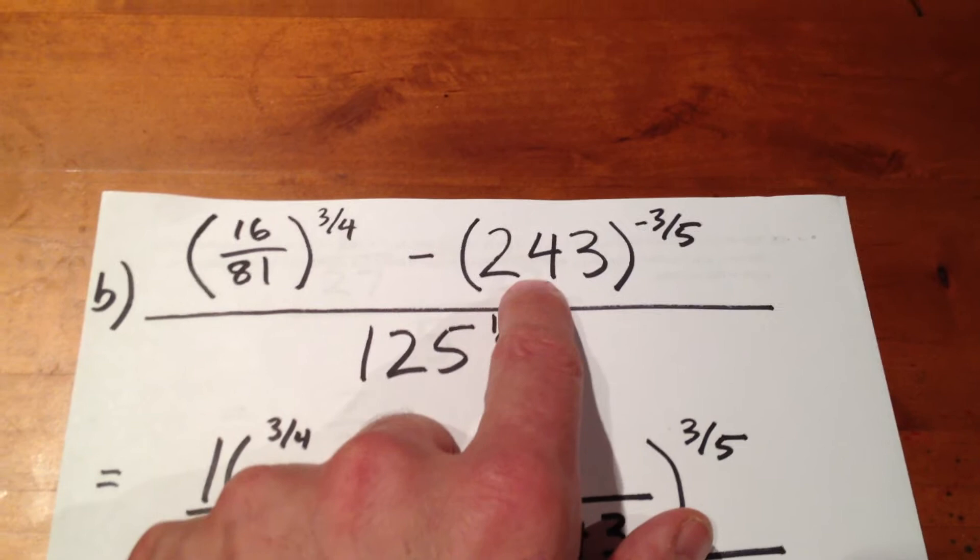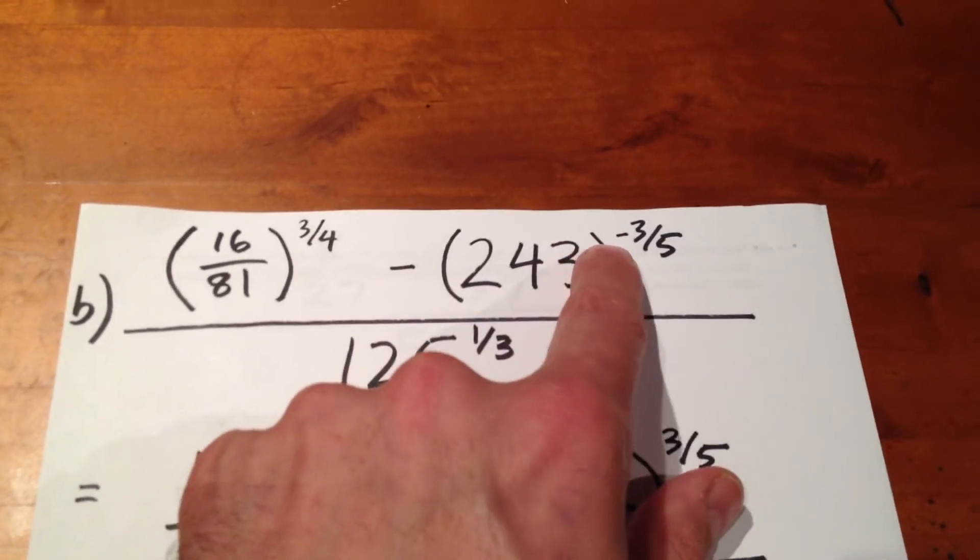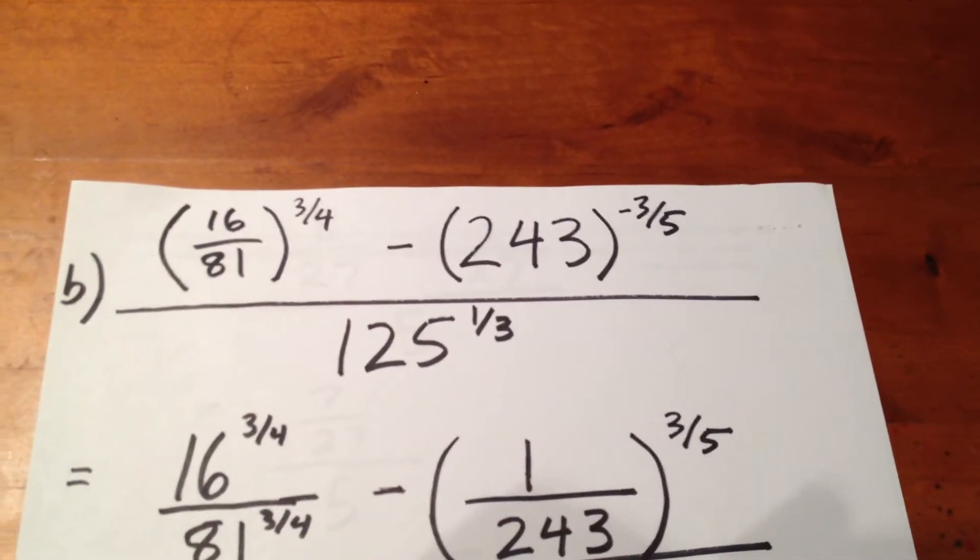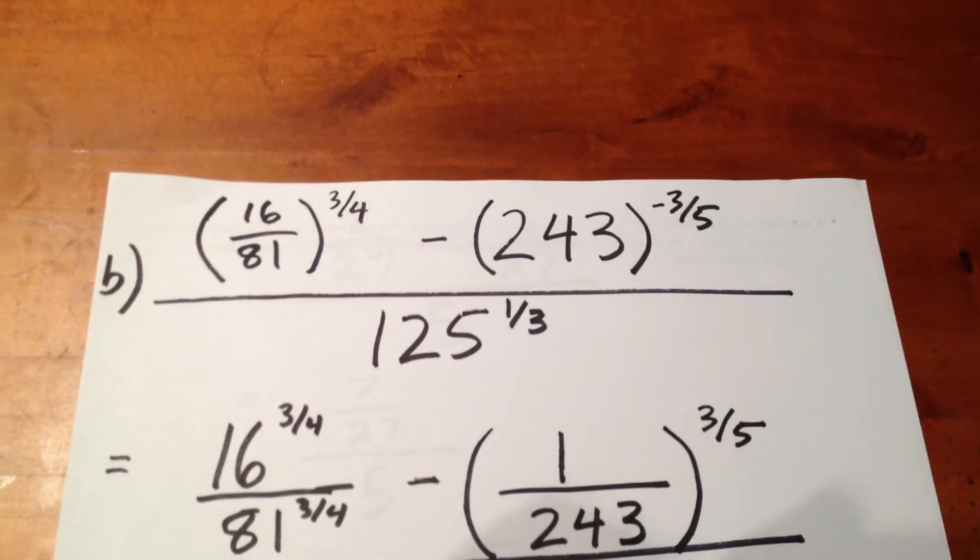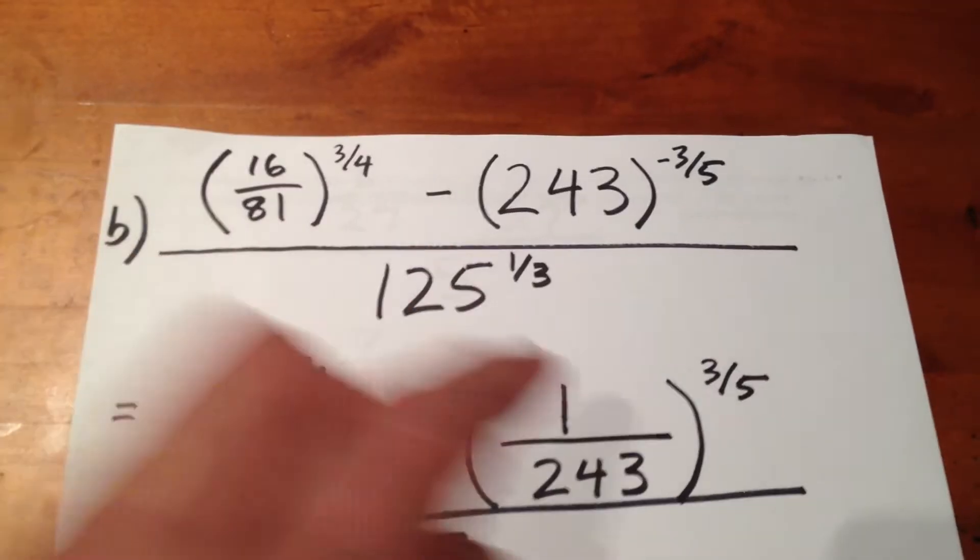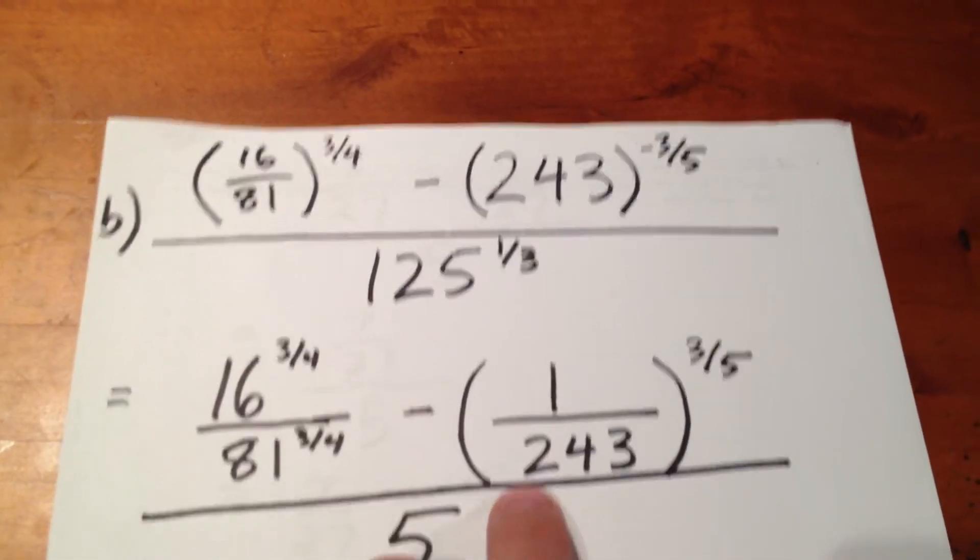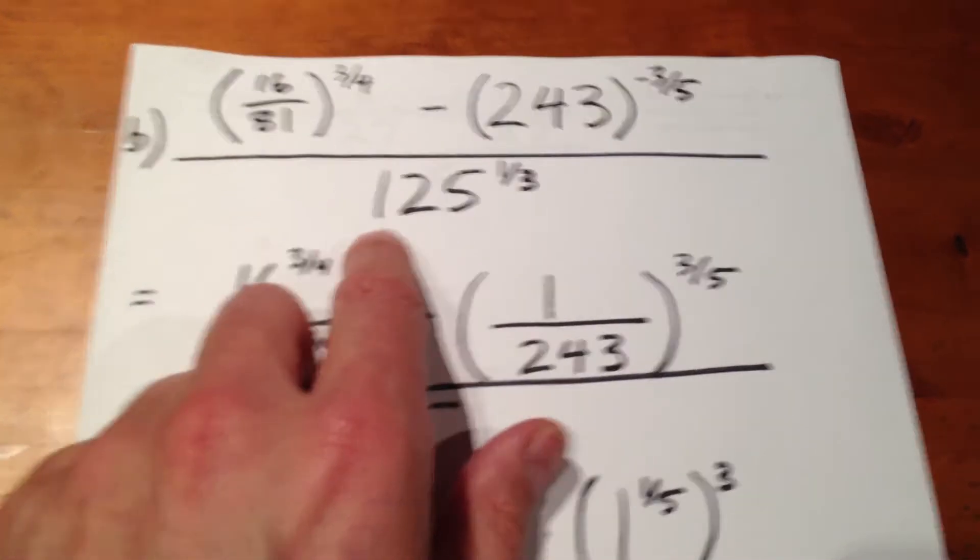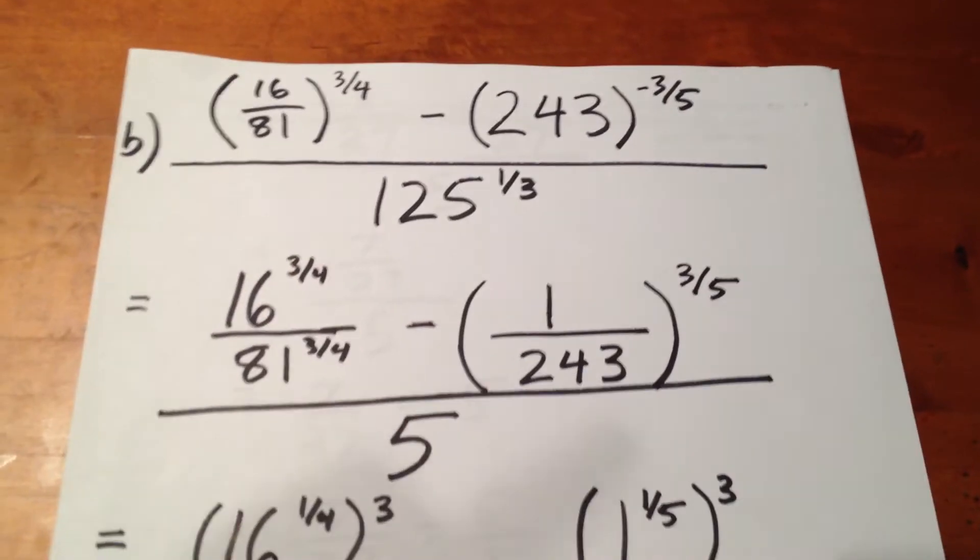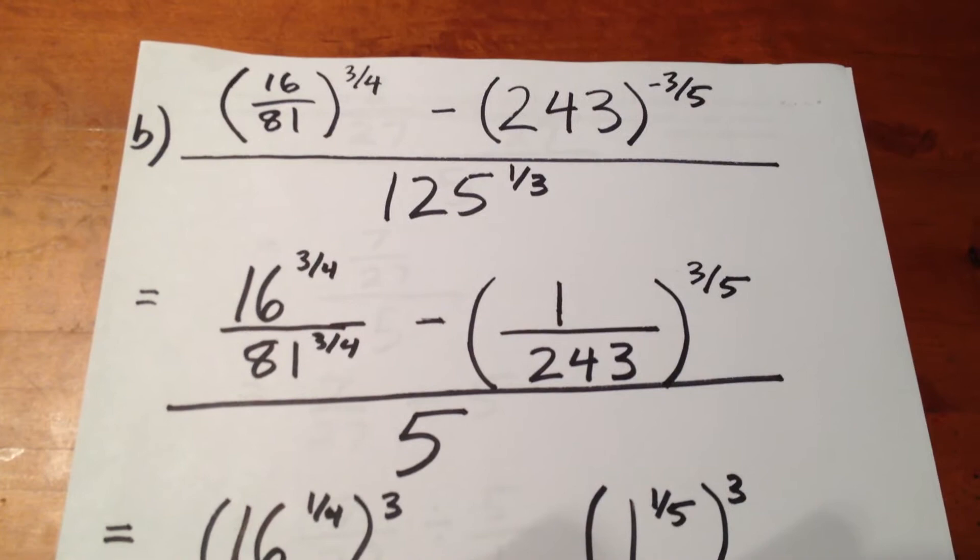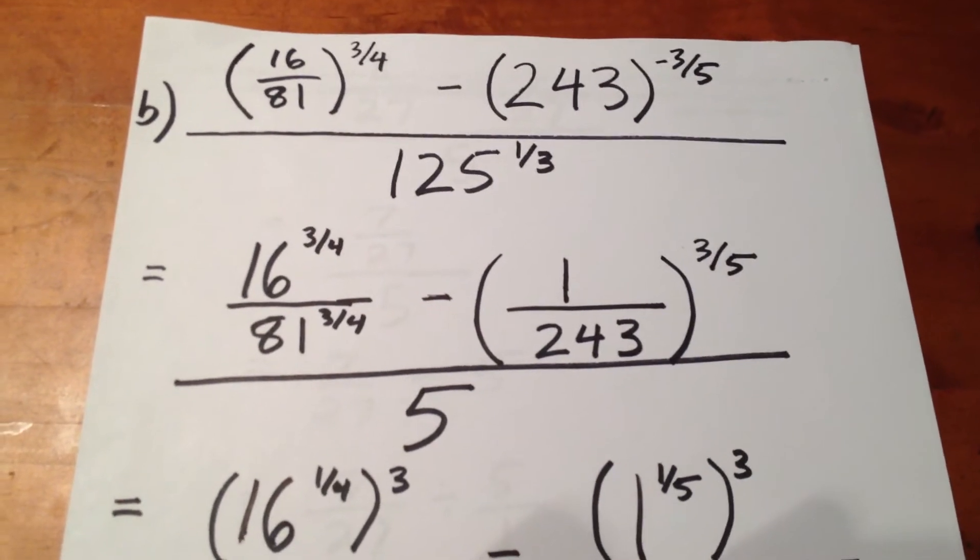Now, we can take, here we have a negative exponent of negative three-fifths. What we can do is take the reciprocal of the base and make the exponent positive. So, we do that. And, we recognize early on that 125 to the one-third is 5 because that's the fifth root of 125.